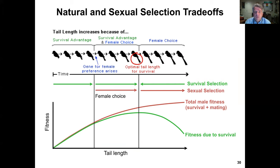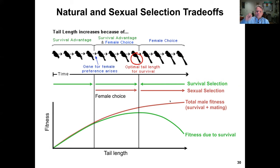If female choice is unchecked, it would continue selecting for longer and longer tails. The trade-off is the point where fitness — balancing having a tail so long that it severely compromises flight and predator escape versus the total male fitness of survival plus mating success — determines the probability of passing genes to the next generation.